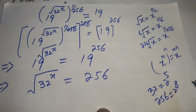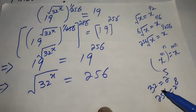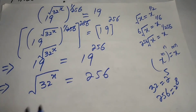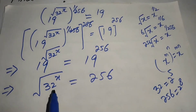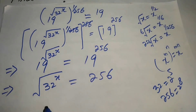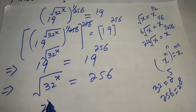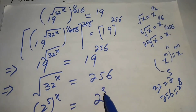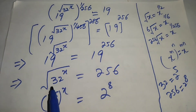We know that 32 is equal to 2 to the power 5, and 256 is equal to 2 to the power 8. So we rewrite the equation as 2 to the power 5, whole to the power x, equals 2 to the power 8.